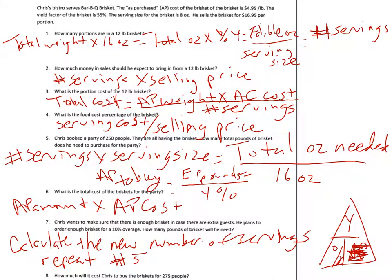On Monday next week we're going to work out one brisket math problem together in class, then I'll give you a completely different one with different numbers for homework due Wednesday. We'll finish up Chapter 3 on Wednesday, so Unit 1 will be done. Chapter 4 is pretty much its own unit — there's a lot of information in it. As soon as I get this uploaded to YouTube I'll post the link in the recorded lectures module in Canvas.